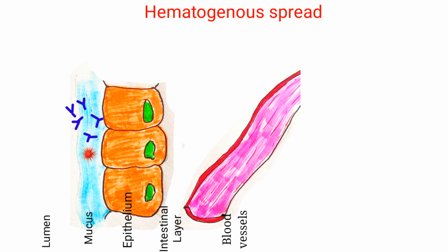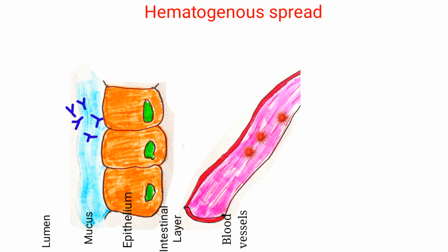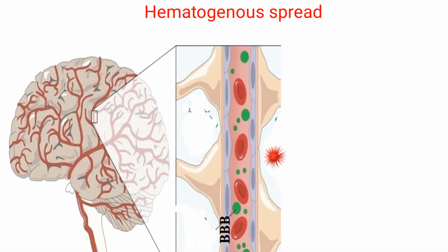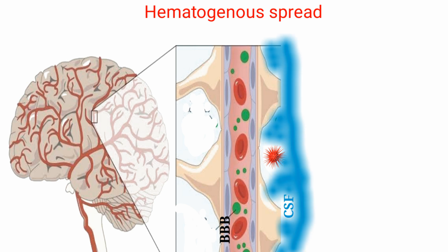This allows the bacteria to colonize the area. Some bacteria have virulence factors or mechanisms which allow them to evade the immune system. The bacteria can enter the bloodstream and cause bacteremia, then travel towards the brain — this is hematogenous spread. Once the bacteria enter the brain, they can also cross the semi-permeable membrane of the brain, that is the blood-brain barrier, and then reach the cerebrospinal fluid.